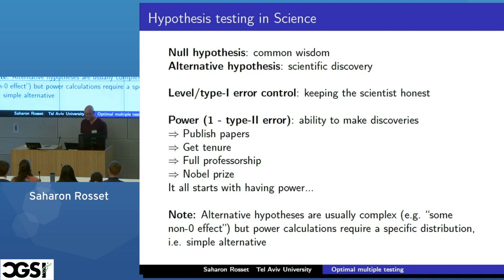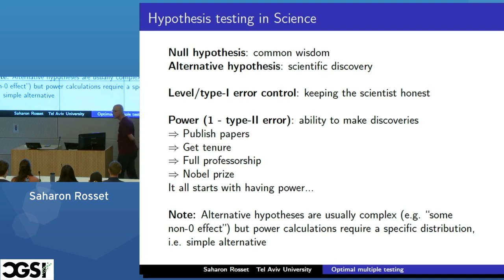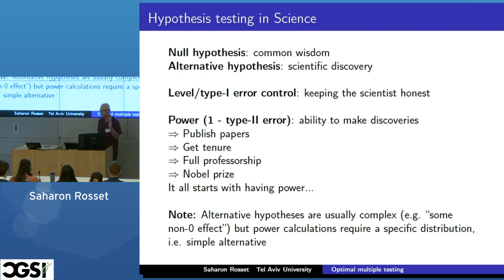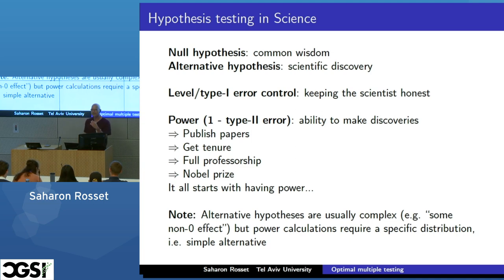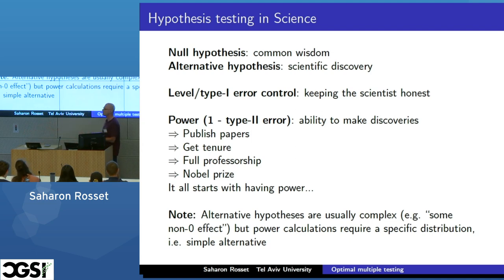One thing we have to keep in mind, because we're going to see some technical formulations, is that in the real world, alternative hypotheses in science are complex. For the Higgs boson, the alternative was that there is this particle at some mass — we don't know what it is. So the alternative is complex. But making specific calculations about things like power typically requires a simple alternative that we are interested in, and we will do calculations under that specific simple alternative.